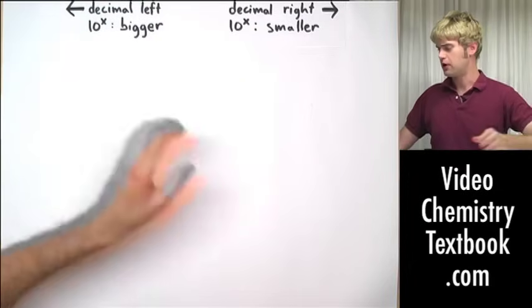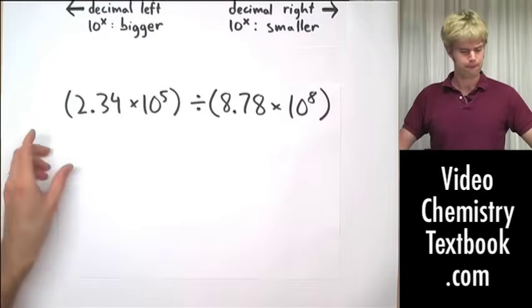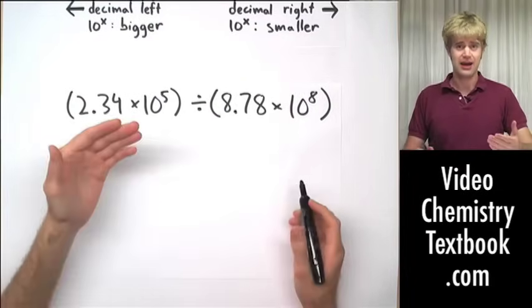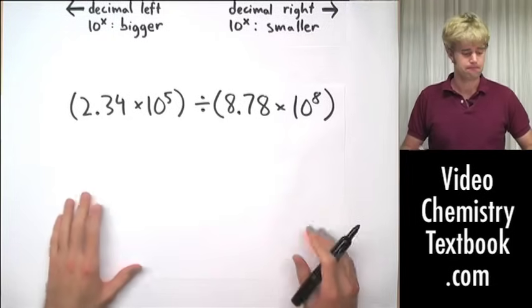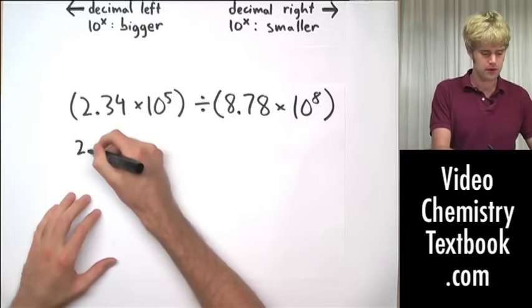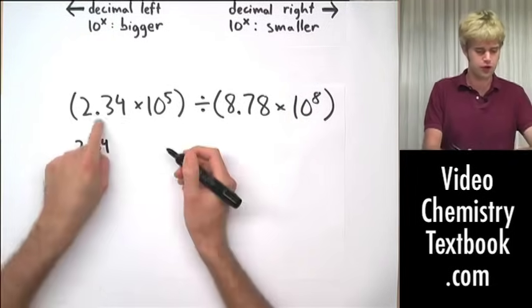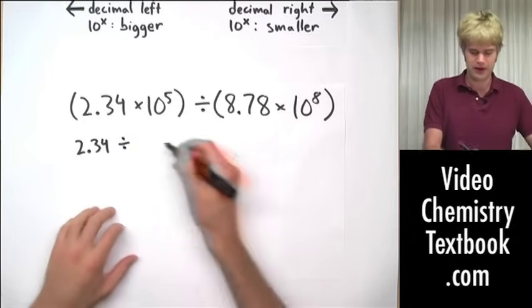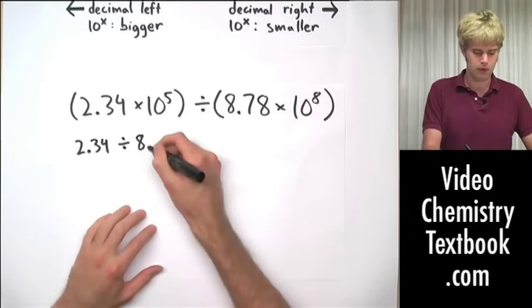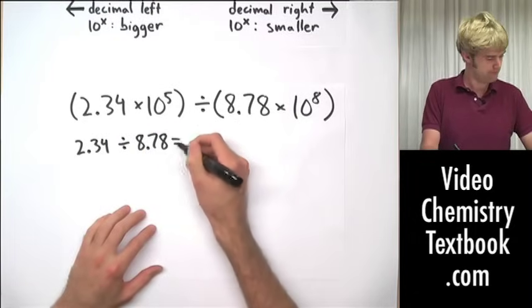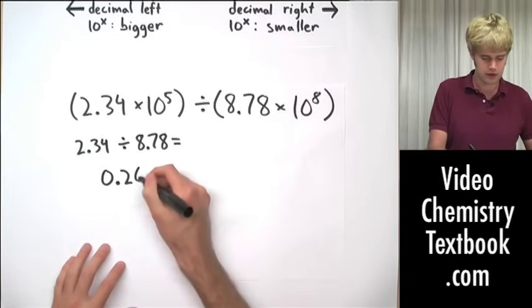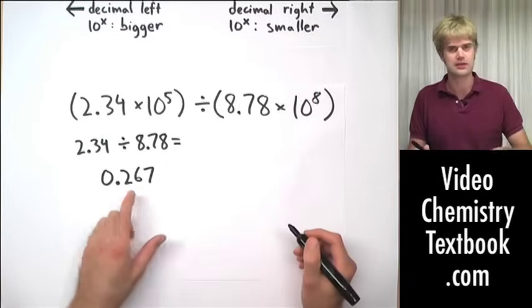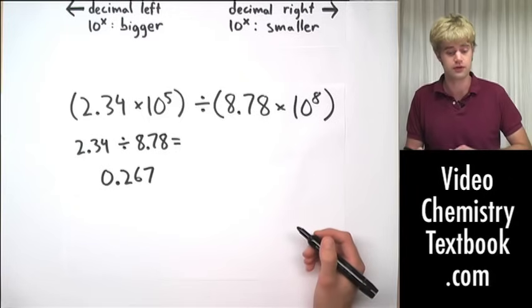One more example here, a division one. Now this is also going to have an answer that we're going to have to revise into correct scientific notation. So the first part of the problem will be 2.34 divided by 8.78, and when I do that I'm going to get 0.267. Right away we can look at that and say that's not going to be in correct scientific notation.